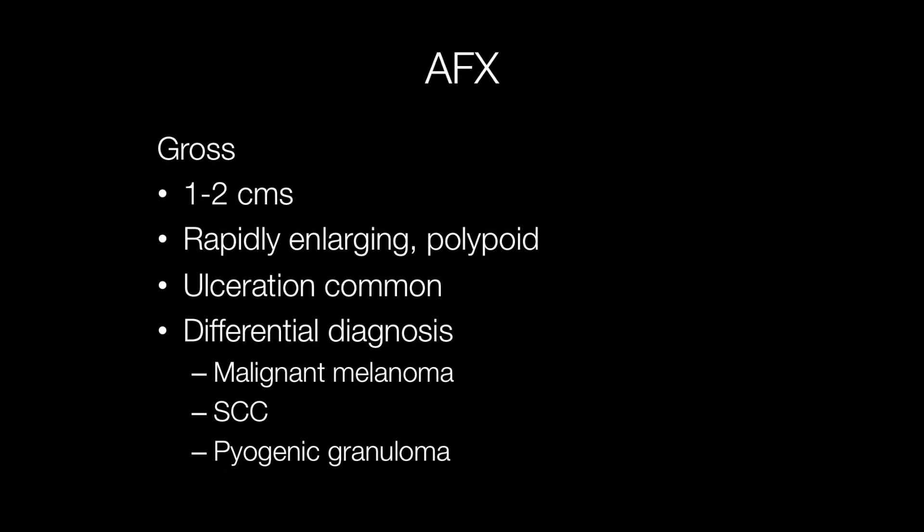Grossly, atypical fibroxanthomas are usually 1-2cm across. They are rapidly enlarging polypoid lesions and ulceration is common. Clinically, the differential diagnosis includes malignant melanoma, squamous cell carcinoma and pyogenic granuloma.